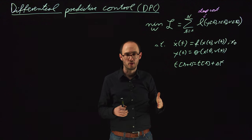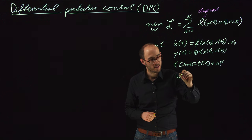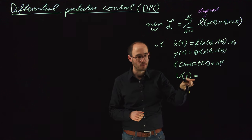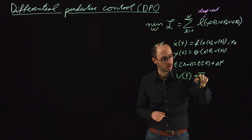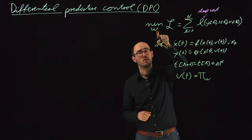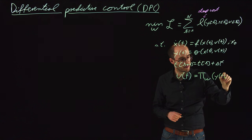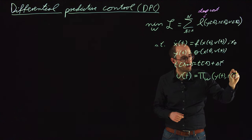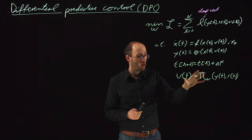DPC — Differential Predictive Control — is a little different in that we try to get a control action sequence u(t) as an explicit function. This explicit function is a control policy pi with parameters w which we want to optimize, and the control policy depends on the output of the system and the reference we want to pursue. That is our control policy.